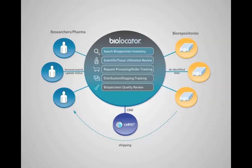BioLocator is a simple open-source web app that connects you with researchers and companies who want the tissue you already have. BioLocator lets you manage this process, set your own rules, and integrate with the systems you already have in place.